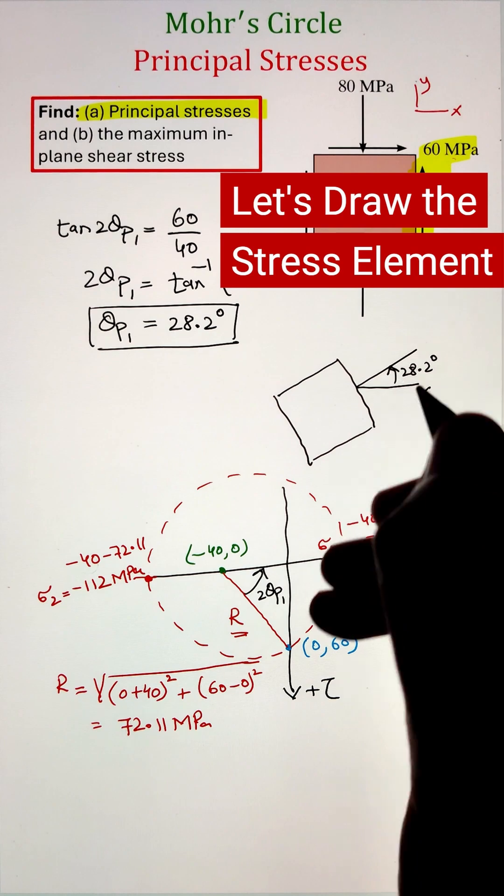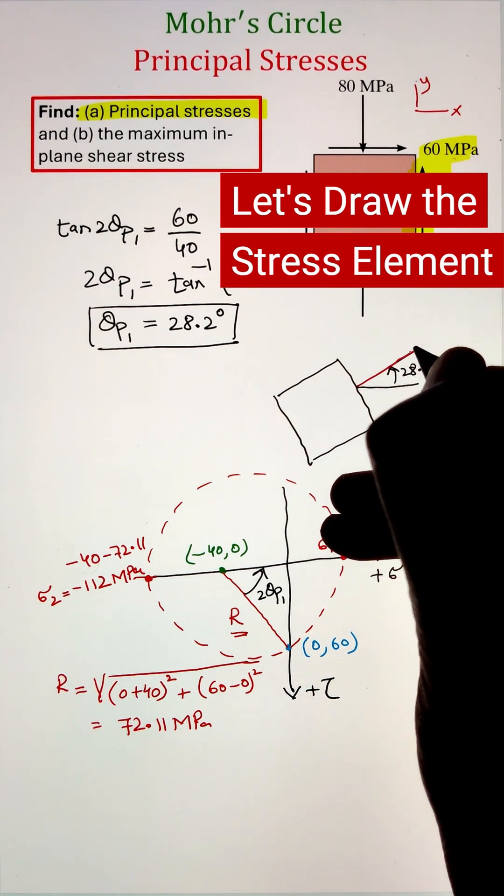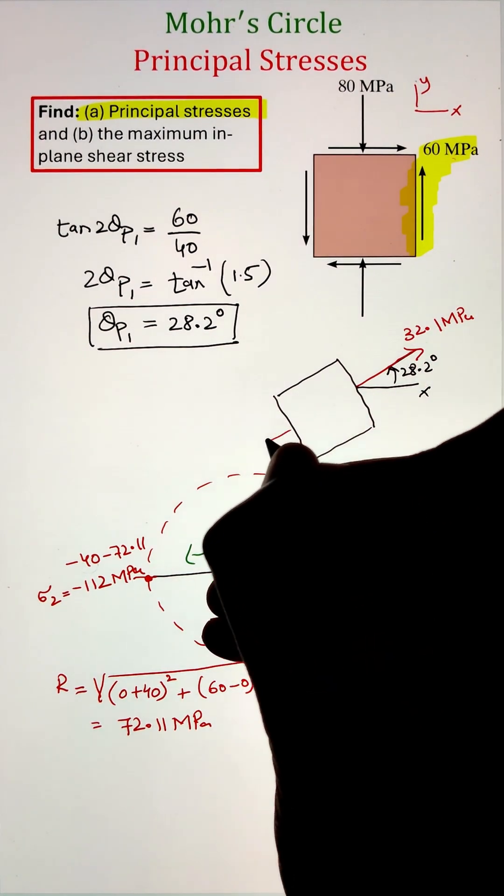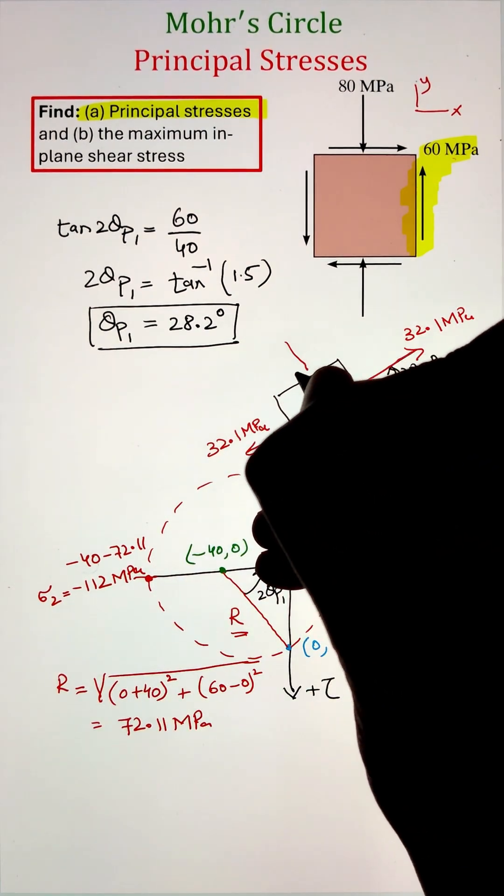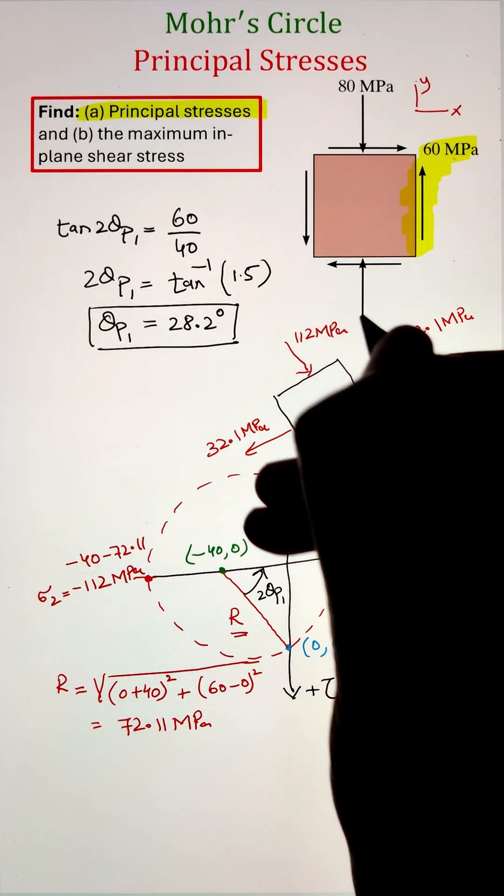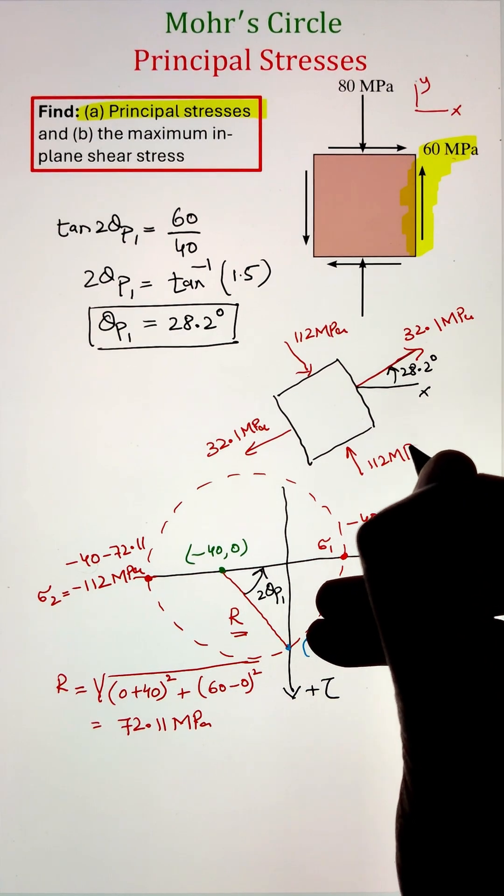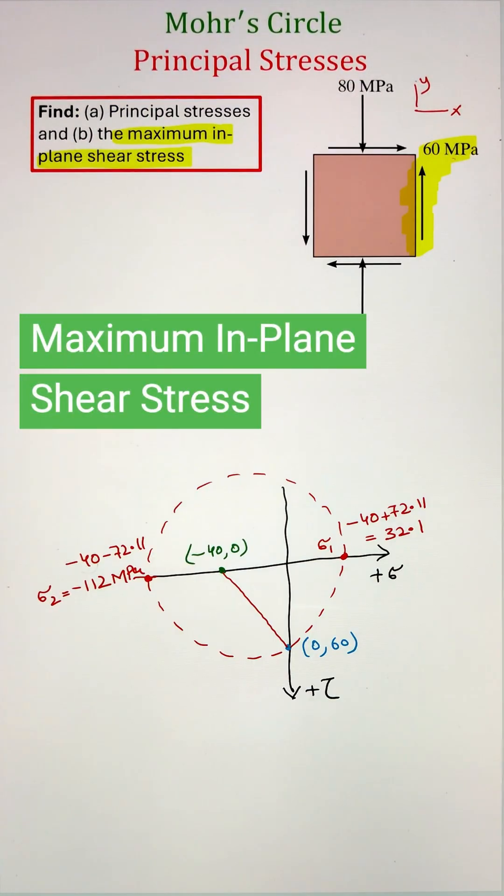To start, we have a horizontal axis X and 28.2 is in the counterclockwise direction, that is the principal axis. So 32.1 megapascal is acting on that direction, whereas at 90 degrees from that, we have our negative 112 megapascal that is shown on the stress element.